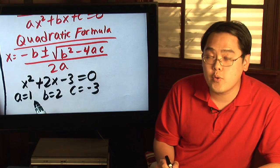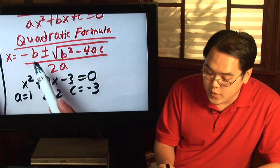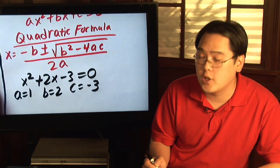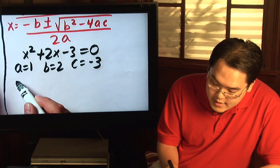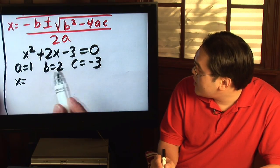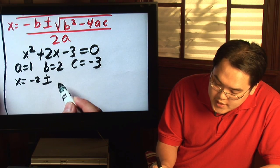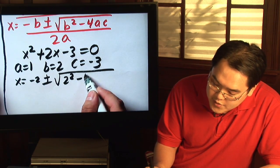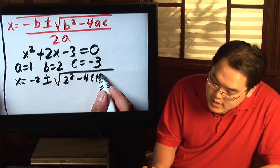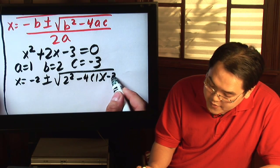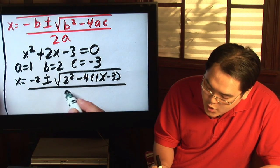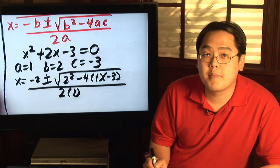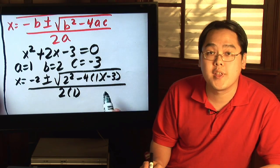What you need to do is plug in everywhere you see a, you plug in 1. Everywhere you see b, plug in 2. Everywhere you see c, negative 3. So this is what the formula looks like. x is equal to negative b, so you have negative 2, plus or minus square root of 2 squared minus 4 times a is 1. The hardest part about this problem is simplifying everything inside the radical.